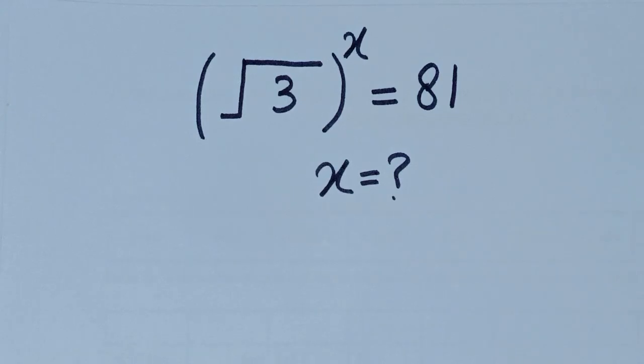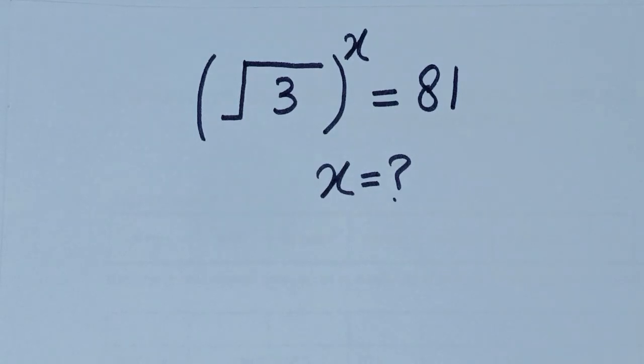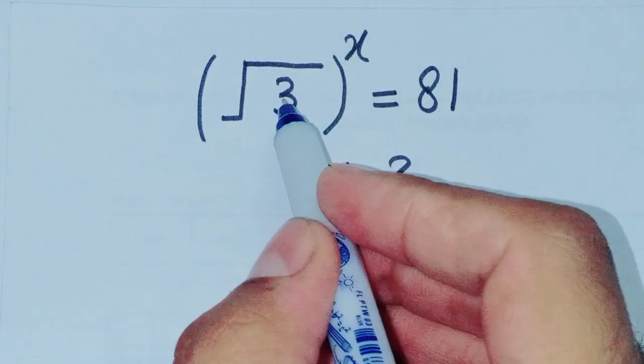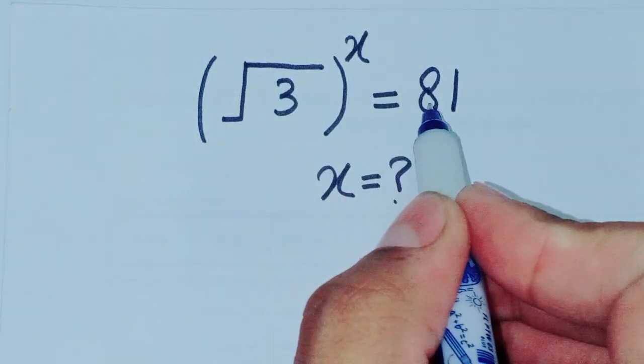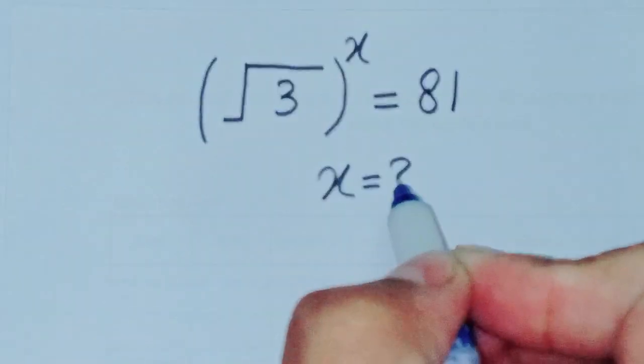Today we will solve a question which is very easy and interesting. The question is: (√3)^x = 81, then find x.